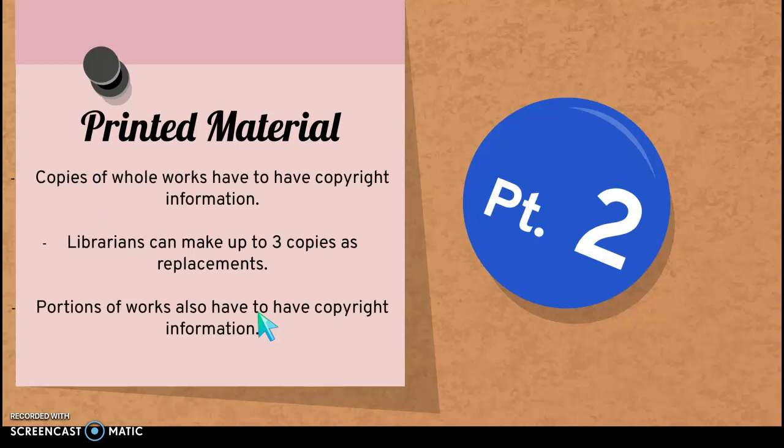On the next slide we have part two of printed materials, because this one's got a lot of information that goes with it. If you make a copy of a whole work — something like an entire book — you have to have the copyright information and it's got to say that that's acceptable. You also have to have purchased it legally. A librarian is able to make up to three copies as a replacement, but again they have to have purchased that object to begin with. Also, a portion of the work has to have the copyright information. You've got to make sure that what you have is legal and that if you are making copies of something, you have permission to do so.